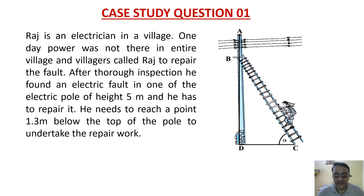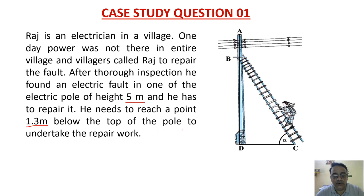Raj is an electrician in a village. One day there was no power in the entire village and villagers called Raj to repair the fault. After thorough inspection, he found an electric fault in one of the electric poles of height 5 meter. He needs to reach a point 1.3 meter below the top of the pole to undertake the repair work.